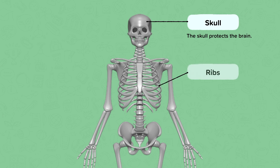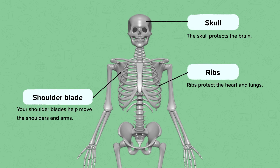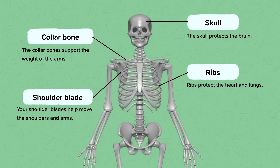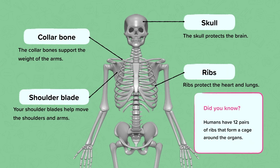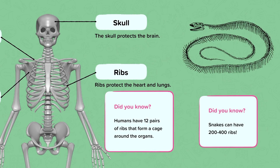In the middle of our body we have the ribs. The ribs form a cage around your organs in the middle of your body, protecting the heart and lungs. Your shoulder blade is slightly behind the ribs and helps your shoulders and arms move. Your collarbone helps support the weight of your arms and goes across your chest all the way out to your shoulders. Did you know that humans have 12 pairs of ribs, whereas snakes can have between 200 and 400 ribs?